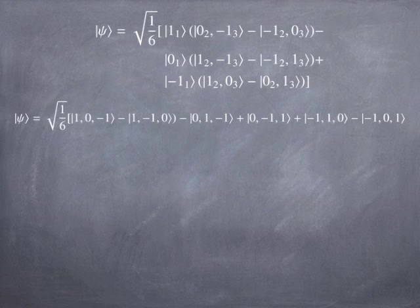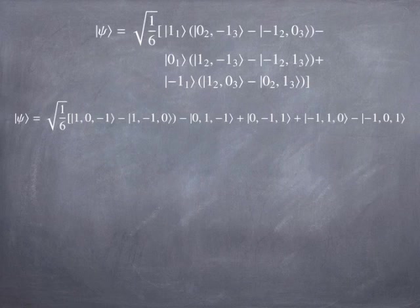Basically the Slater determinant tells you there is a superposition of three-electron states that is totally anti-symmetric. This would be the spatial part of the wave function because the spin part is going to be symmetric — since we've maximized the spin with all three spins up, that combination is necessarily symmetric. So that's one way to calculate the state, but the question is: what is the angular momentum of that state? It's hard to look at the result and know what angular momentum it corresponds to.